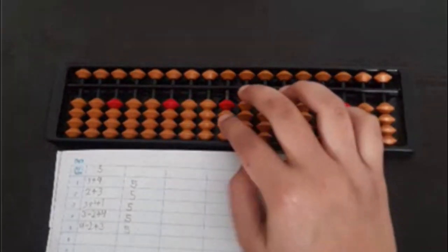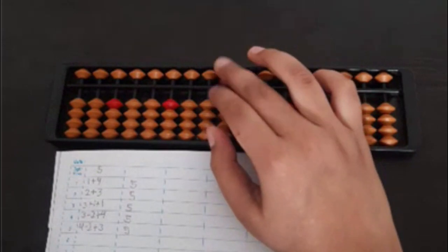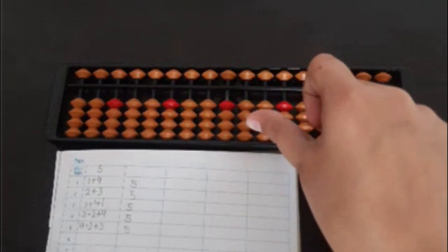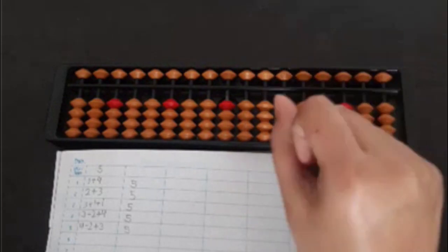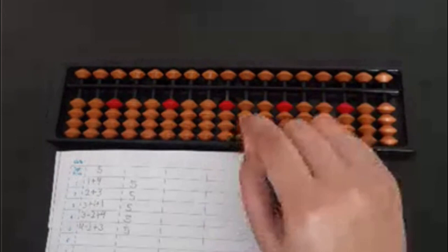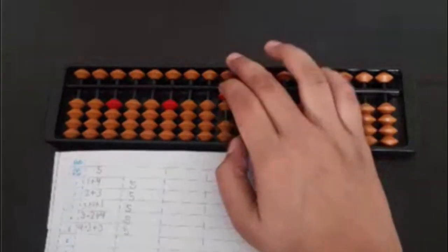And 3 plus 1 plus 1. We will be using our thumb for this. Just to show you I am doing like this, otherwise it won't be visible. So last question is 4 minus 2 plus 3.